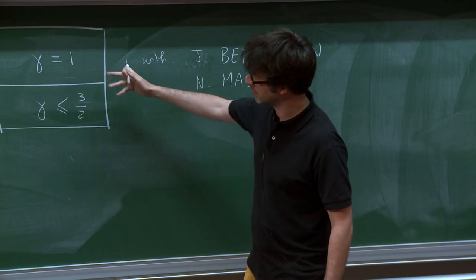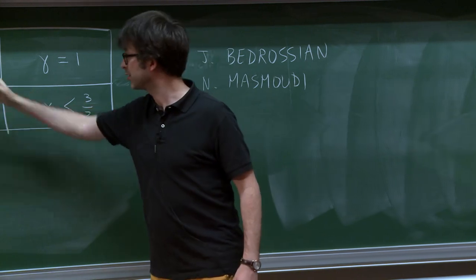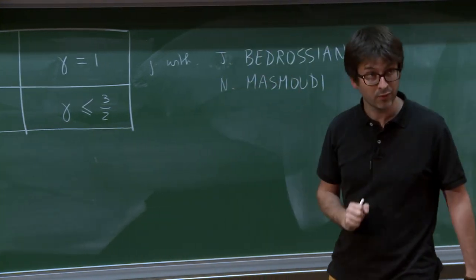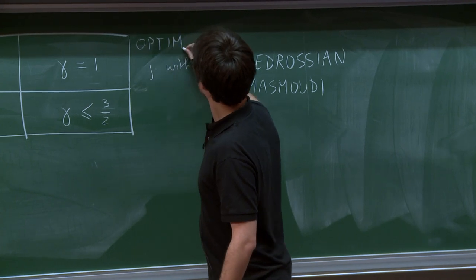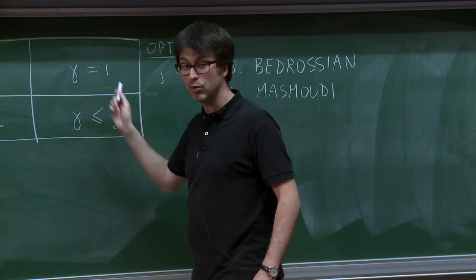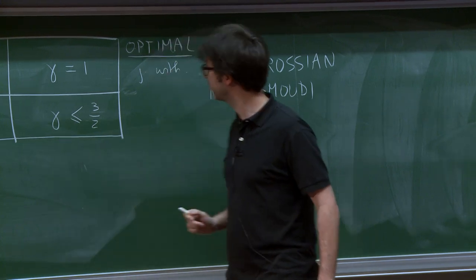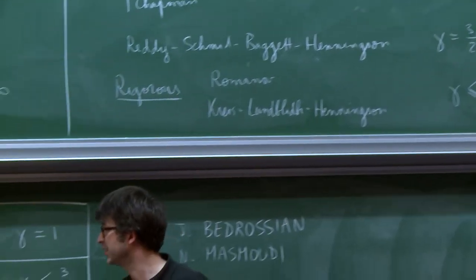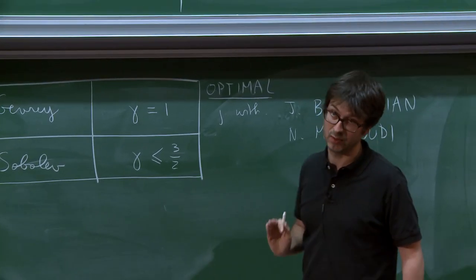So what's very nice is that it settles the debate, right? We have theorems which actually say that in Gevrey topology, gamma is one. And in Sobolev, gamma is less than or equal to three halves. We are furthermore able to say that this result is optimal. And that's why I stated it as gamma equals one. This one, we suspect it is optimal because it agrees very much with what these guys found for rough data. And Sobolev topology is certainly rougher than Gevrey. So we suspect it is optimal, but we could not really prove it.